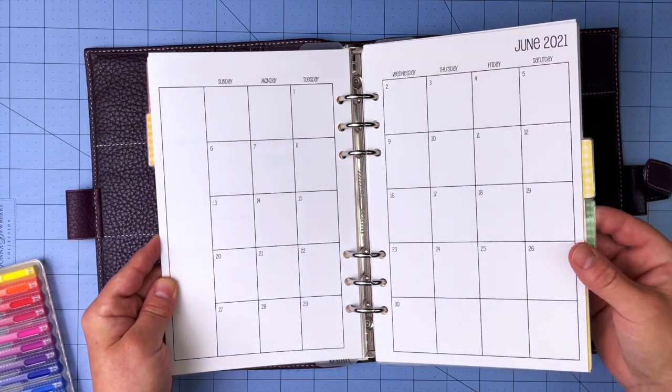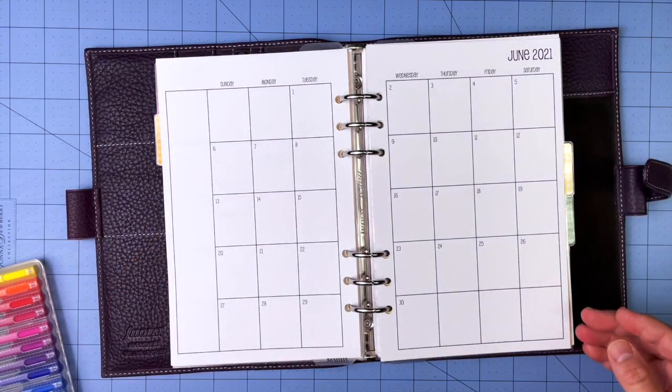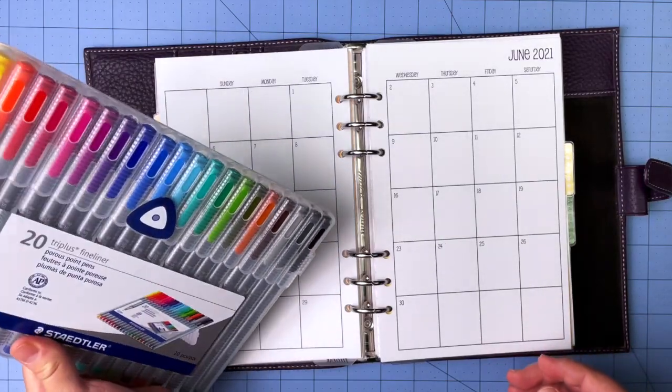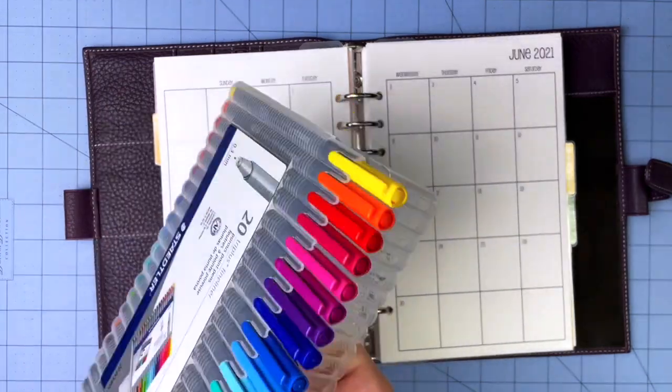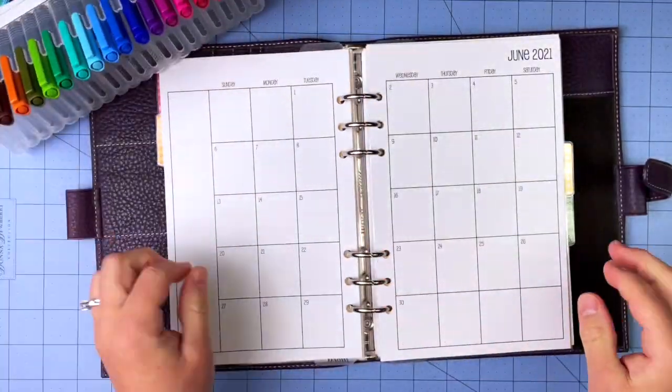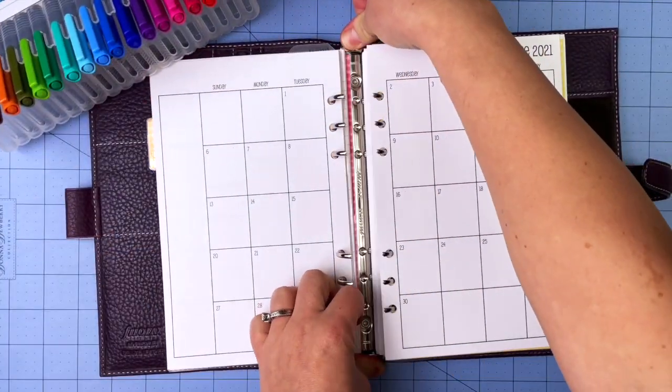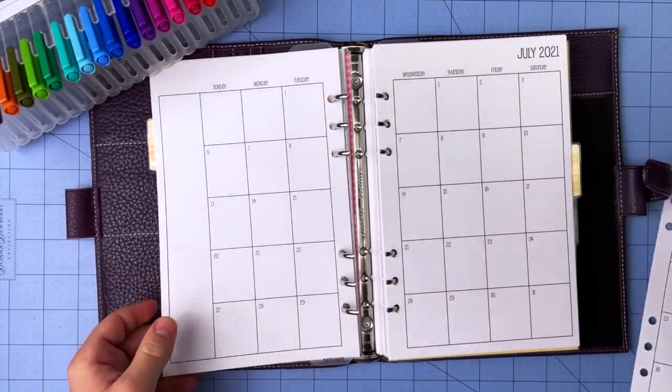I don't think I've ever done a monthly plan with me. I actually in my A5 only use pen - I use these Staedtler pens. I have a color coding system, and I'm just going to walk through and show you how I kind of set up the month. First, let me get this opened up here.